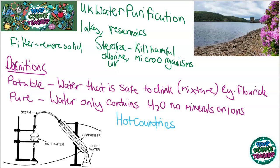The water does contain some minerals that are dissolved into it. The more minerals that are dissolved in the water can define that water as being hard or soft water. Hard water has more minerals dissolved in it. In hot countries where the water supply might not be as plentiful as in the UK, and they can't use lakes and reservoirs, what they sometimes do is use salt water collected from the sea and do a process called distillation, in which they heat up that water to evaporate the water, leaving the salt behind. The water condenses in the condensation tube.